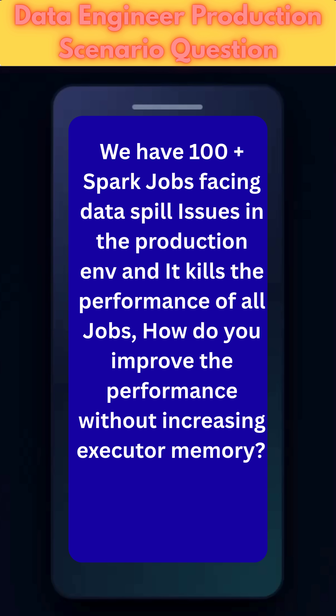Suppose you have 100 Spark jobs and all 100 are running with the same cluster and job configuration. Job configurations include things like executor memory, driver memory, executor cores, driver cores, and so on. If you change one job configuration, it will impact the other jobs too, so we should not change that. We have observed that a few of the jobs are spilling data to disk, which causes a lot of disk I/O operations and hampers the performance of the Spark job. So how can you improve the performance of that Spark job?